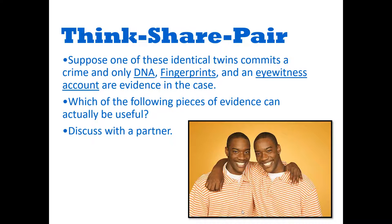Before we jump into the lesson, I want to share this with you and see how you would answer this question. Suppose one of these identical twins commits a crime and there are three pieces of evidence found at the crime scene: DNA, fingerprints, and an eyewitness account. Which of those three pieces of evidence would actually be useful to investigators?